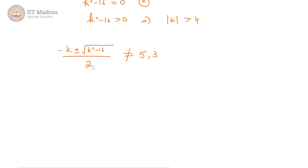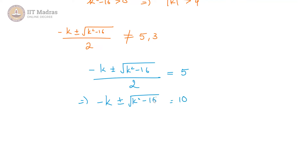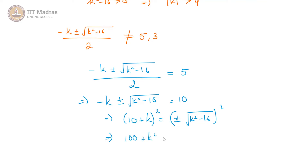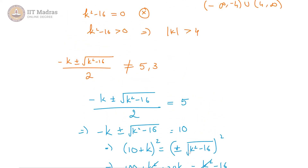To find that condition, let us start with (-k ± √(k² - 16)) / 2 = 5. This gives -k ± √(k² - 16) = 10, so (10 + k) = ±√(k² - 16). Squaring both sides: 100 + k² + 20k = k² - 16, and k² cancels. So 20k = -116, which implies k = -5.8. When k = -5.8, the root of the quadratic equals 5, which is not allowed.